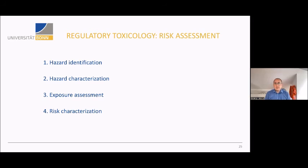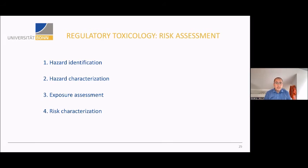There are four steps in toxicological risk assessment. First, hazard identification — which hazards are we talking about. Second, hazard characterization — the experimental toxicology part presented in the first half. Third, exposure assessment — very important and often forgotten. For example, in the current discussion about glyphosate, people focus on hazard properties but completely forget about exposure, and then still determine a risk, which is not a valid approach. We are mainly focused on hazard characterization.